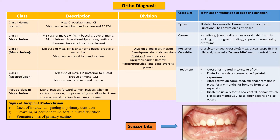During the early interceptive phase, appliances used include habit-breaking appliances, functional appliances, and headgears. Once all permanent teeth except third molars are erupted — after 12 years of age — the comprehensive phase begins using fixed orthodontic appliances. Cross bite is treated with palatal expander appliances; after the cross bite appears corrected, the expander must be retained, and expansion may create a diastema which will close spontaneously.